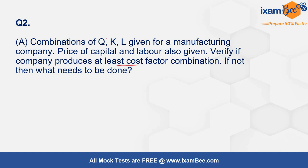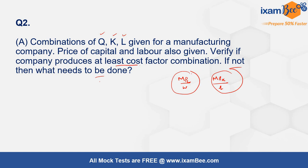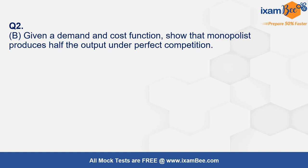The second question asked you to verify whether the least cost factor combination was being produced, given values of capital, labor, and output. A table was provided with output, capital, and labor for a company, and you had to check whether it was producing at the least cost factor combination and, if not, what could be done to rectify it. You had to check the ratio MPL divided by the wage (price of labor) and MPK divided by the price of capital, and compare whether these two ratios are equal.